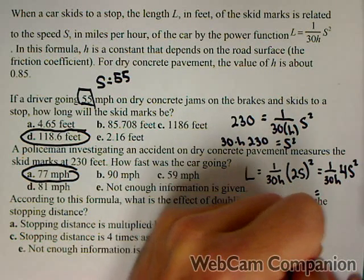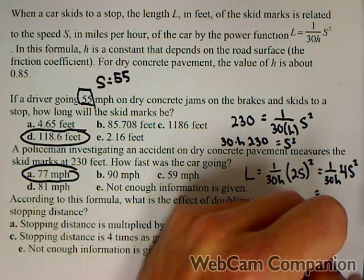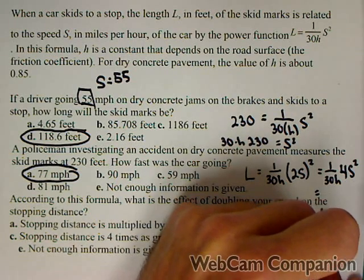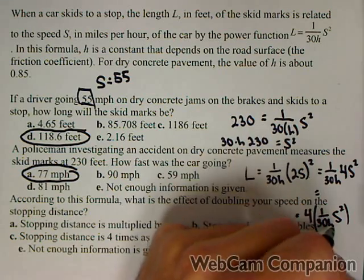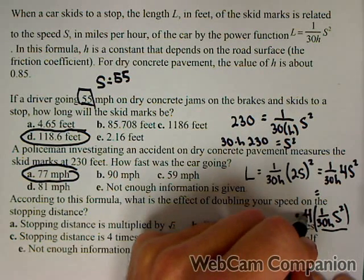And what you'll see is that it's actually, when we simplify, let's write it down here, we have 4 times 1 over 30h s squared. Well this is what it originally was, now it's 4 times as great.